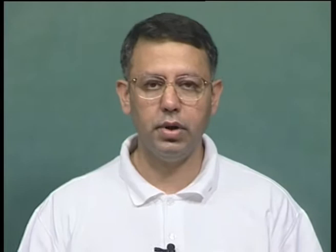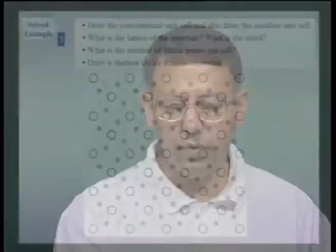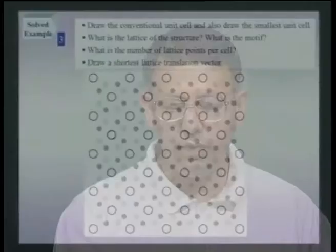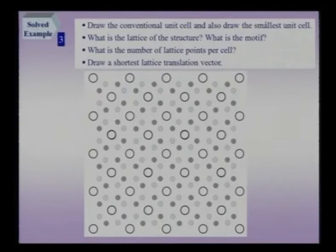Let us consider another example to clarify some of the basic concepts which we have been considering in this chapter. For the structure shown on screen, let us draw the conventional unit cell and also the smallest unit cell. We should identify the lattice parameter, the motif, calculate the number of lattice points per cell, and draw the shortest lattice translation vector.